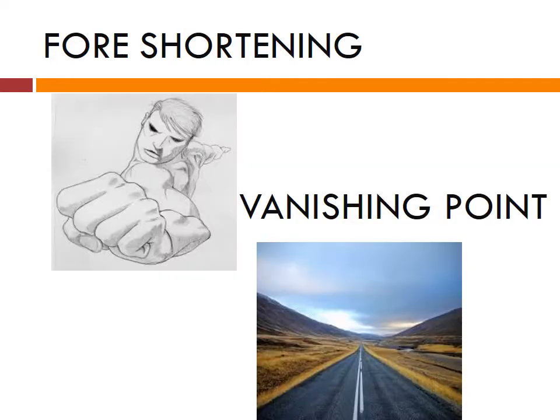Now comes foreshortening and vanishing point. What is foreshortening? Foreshortening is distortion due to perspective. An object appears compressed when we see it from a particular viewpoint — that is foreshortening. In the above given image, the hand appears to be bigger on one side while the other hand appears to be compressed — that is foreshortening.